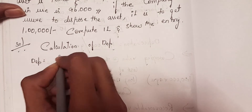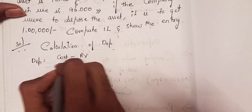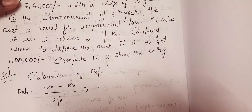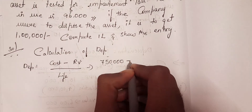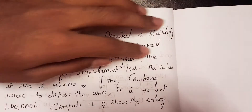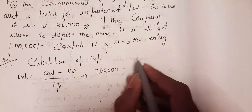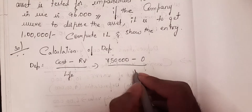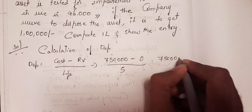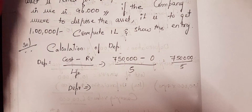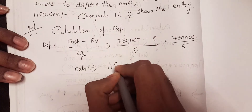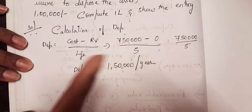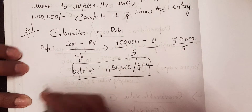First, calculate the depreciation. The formula is: cost minus residual value, divided by life of the asset. Cost of PPE is seven lakh fifty thousand. There is no residual value given in the question, so residual value is zero. Life of the asset is five years. So depreciation equals seven lakh fifty thousand divided by five, which gives one lakh fifty thousand per year.